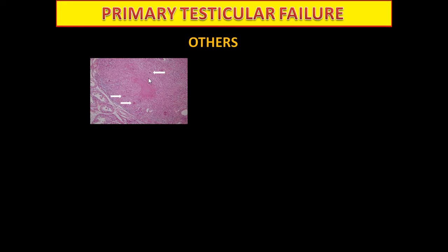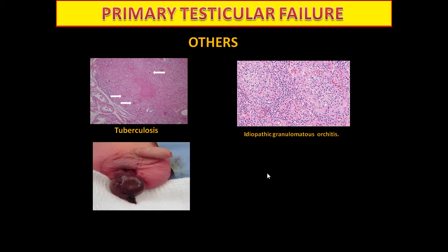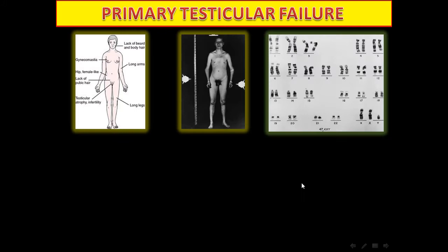Other findings in testicular biopsy include tuberculosis with caseating granuloma, idiopathic granuloma orchitis, and testicular torsion with hemorrhagic infarctions.